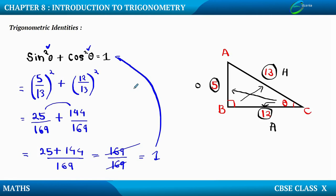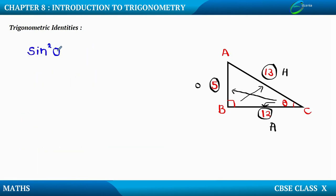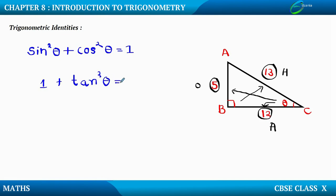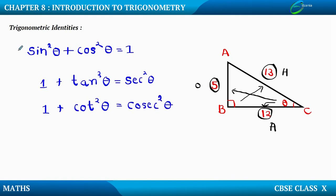Similar to this identity we have two more identities. The first identity was sin squared theta plus cos squared theta equals 1. The second identity is 1 plus tan squared theta equals sec squared theta. And the third identity is 1 plus cot squared theta equals cosec squared theta. These are the three very important identities which we are going to use while solving problems.